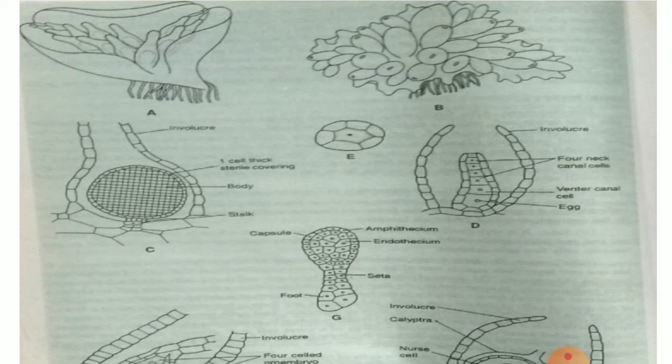The midrib is multistratose. All the cells of the thallus contain chloroplasts except the rhizoidal cells. Now coming to reproduction: the plant reproduces both by vegetative reproduction and sexual reproduction.